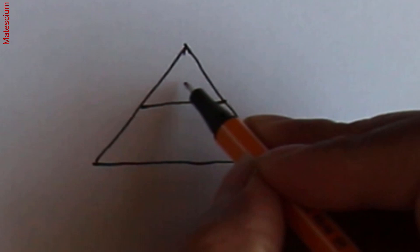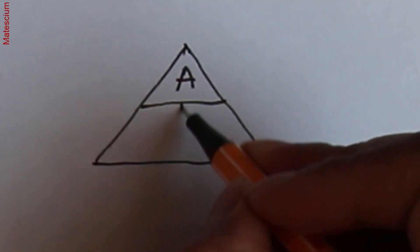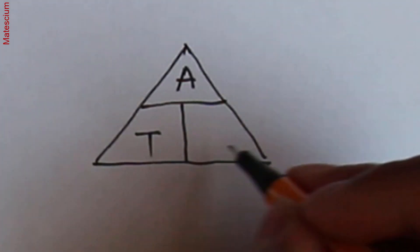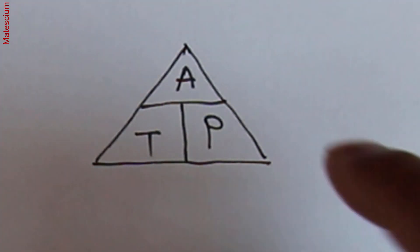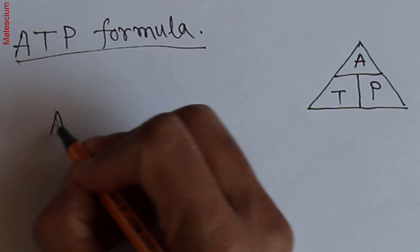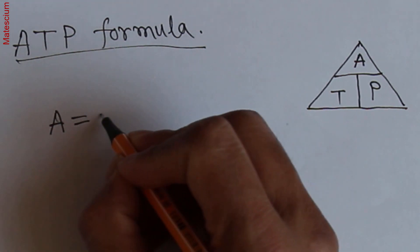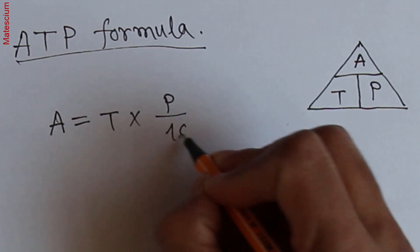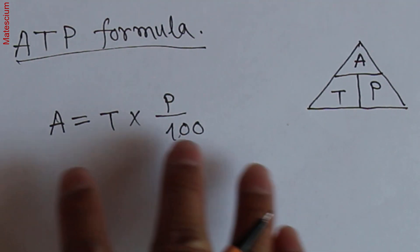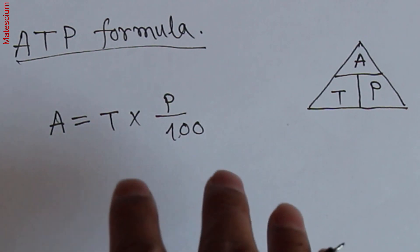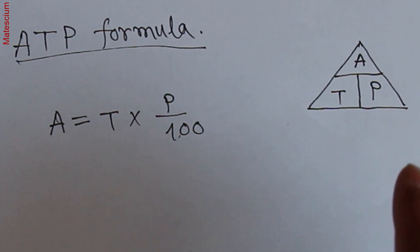A means asking value that you have to find out, T means total value, and P means percentage. So totally it's called ATP triangle formula. What is that formula? ATP formula is: asking value equals total value times percentage over 100. This is ATP triangle formula. You can use it and find any complex percentage of any number.